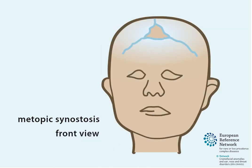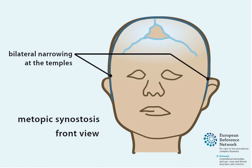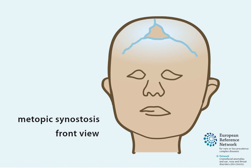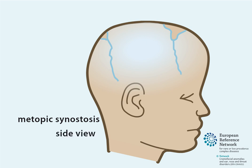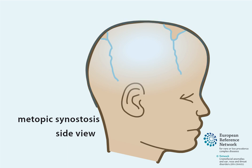When looking at the front of the head, you notice lateral orbital retrusion with associated bilateral narrowing at the temples. Moreover, the eyes are set closer together, known as hypotelorism. Compensatory widening of the side and back of the head can occur. From the side, the forehead is in line with the nasion and the back of the head might be more prominent.